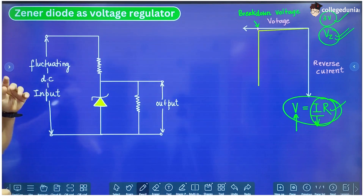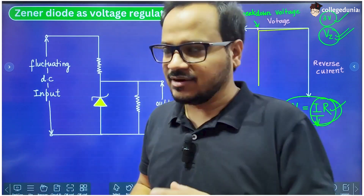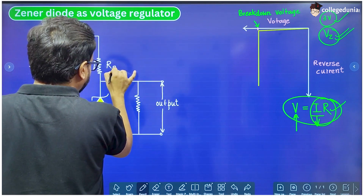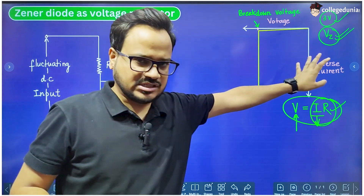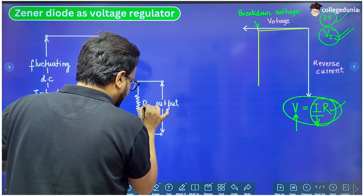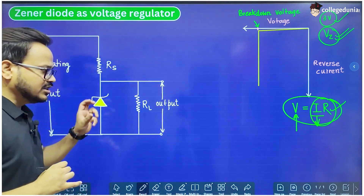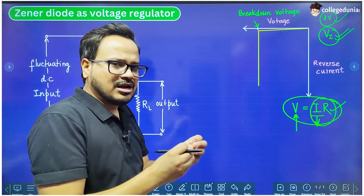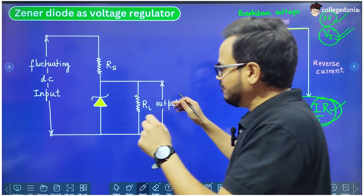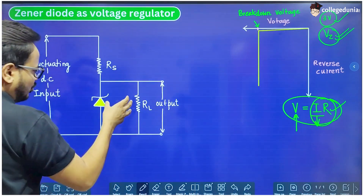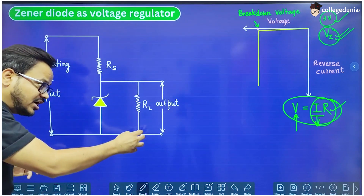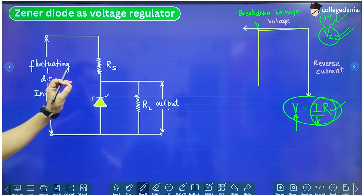Here is how we can use the Zener diode as a voltage regulator. Zener diode is simply a P-N junction which operates in reverse biased mode. We can use it as a voltage regulator across an output resistance. Suppose this is a resistance RL — this could be a small bulb, an LED, or any other device whose resistance is RL — and we have connected it to a fluctuating DC input but we need a constant output across that particular device.